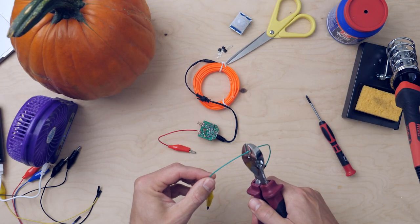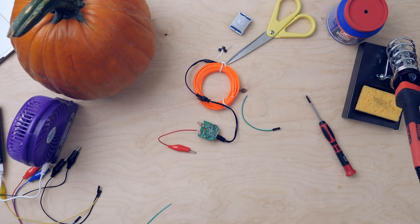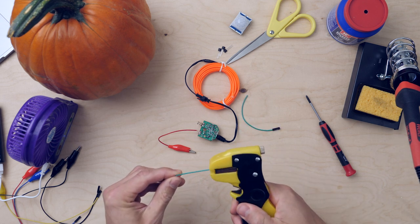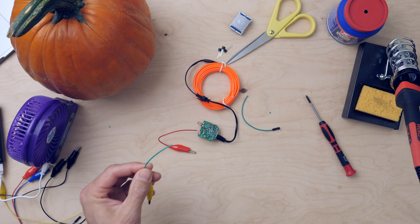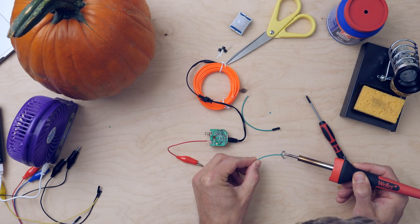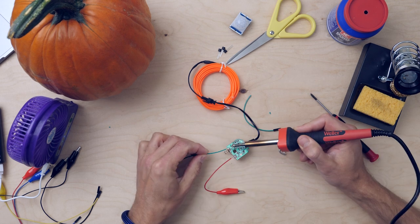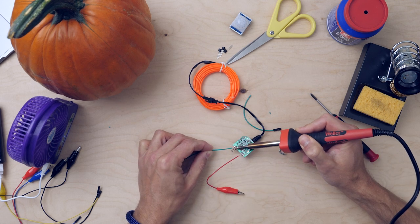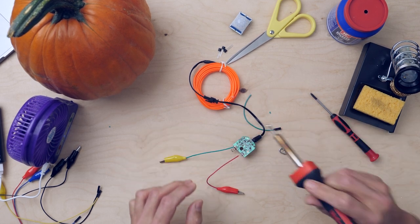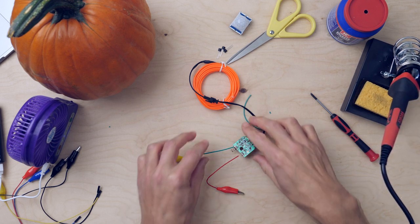First, use the stripping pliers to free up both ends of a piece of wire and solder the one end to the PLUS side with spring. Your turn.